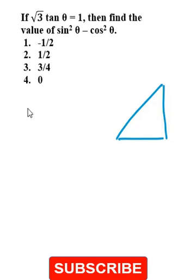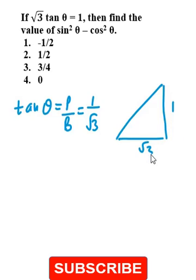Tan θ is given to us. And tan θ is equal to P over B. And what is B? In this case, √3 and what is B? 1. So first of all, you will find the hypotenuse of it.